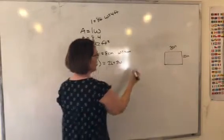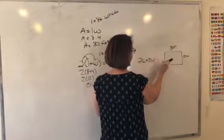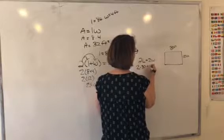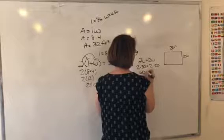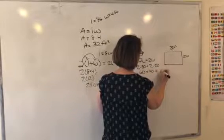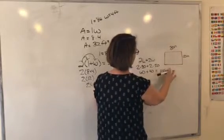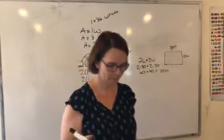So I could take this one, 2L plus 2W, and now I'm going to plug these numbers in. 2 times 30 plus 2 times 20. And I get 60 plus 40, which equals 100 inches. Ta-da! Very good?